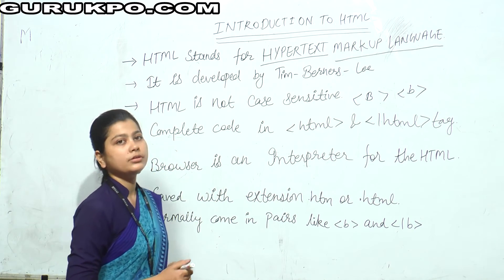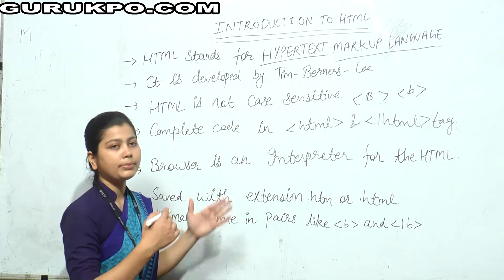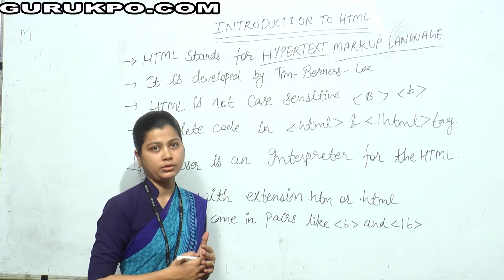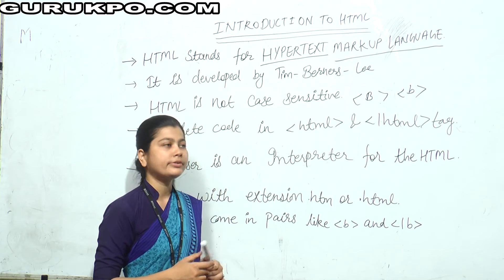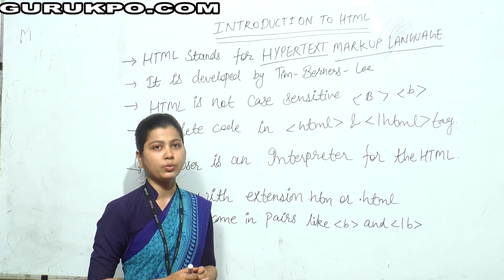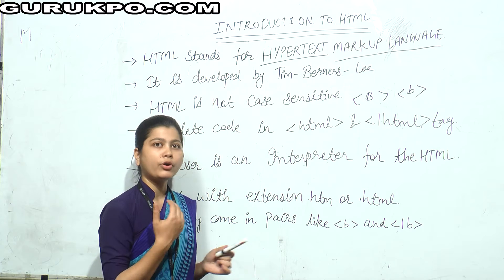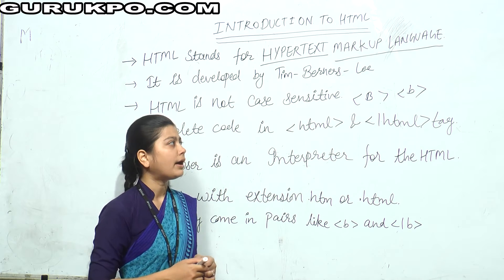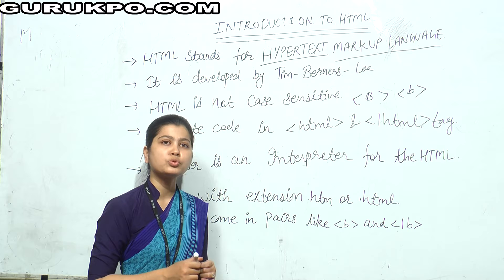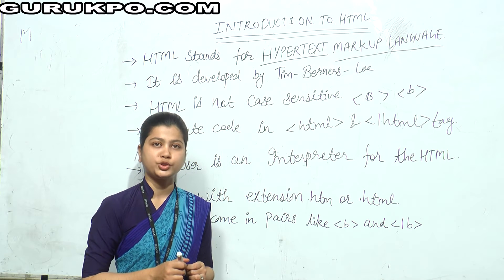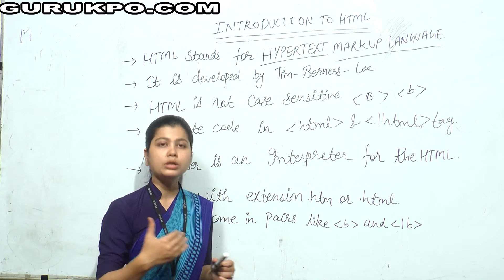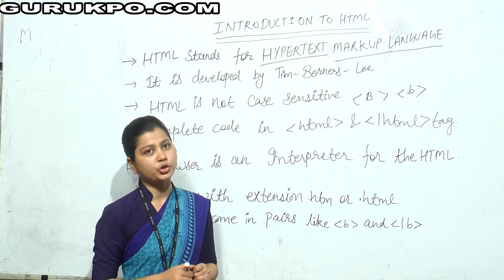In an HTML document, the browser sends the whole code from the server to the client. So there is no security for our code. We can view our code by right-clicking on the web browser and choosing the 'View Source Code' option, and then we can see the whole source code of the HTML document.